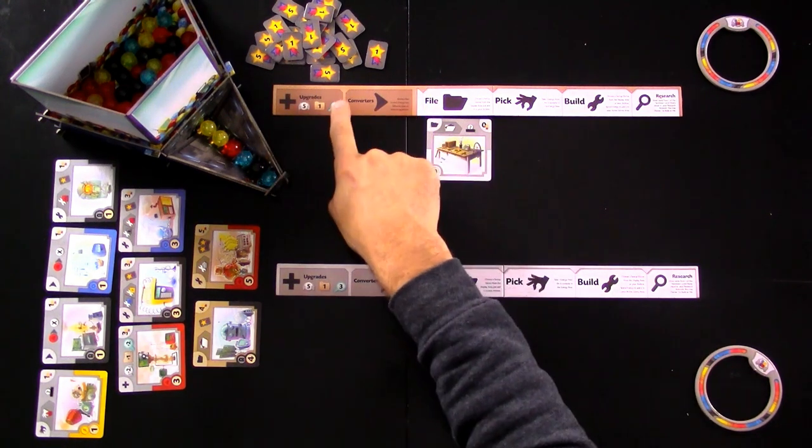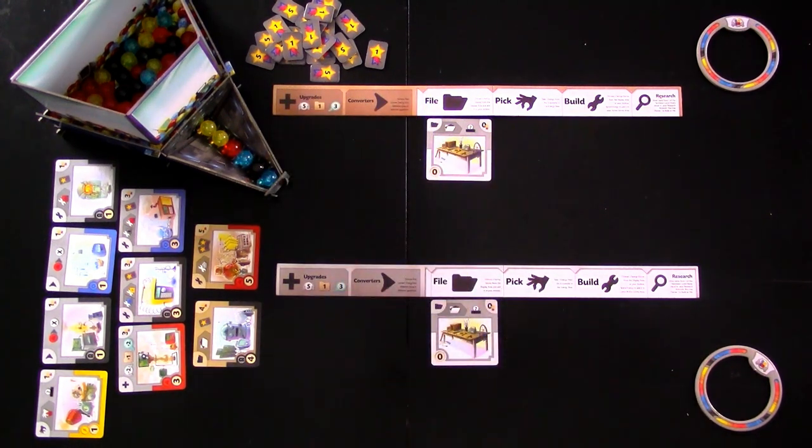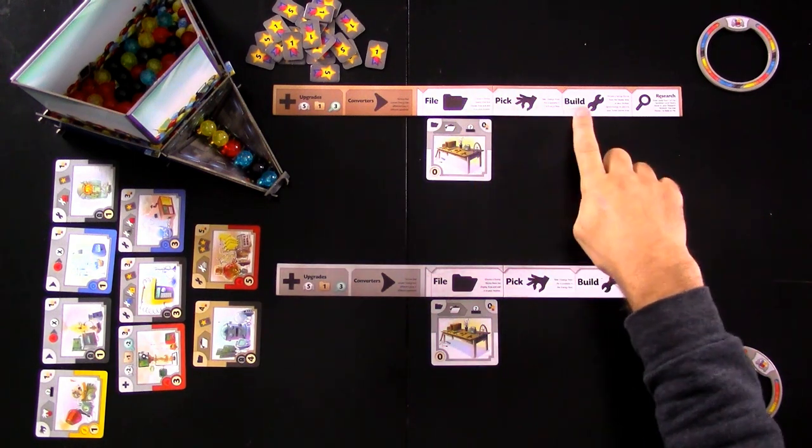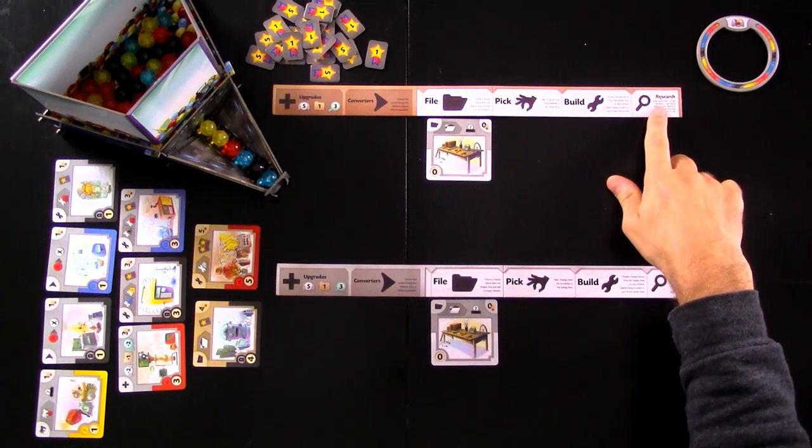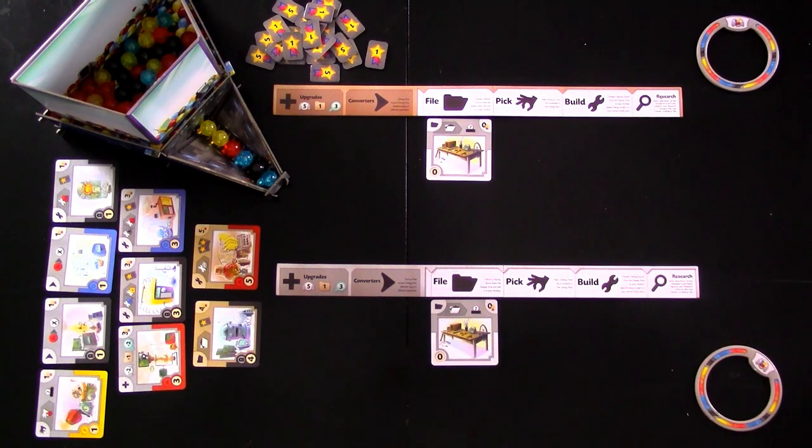So anyway, I've got my energy dispenser contraption built. We've got our group of gizmos waiting to be built. We've got our lab set up. Let's go. I'm the first player because my lab is the alternate brown color instead of the regular gray color. And on my turn, I will either file, pick, build, or research one of those four actions, and then that'll be it.